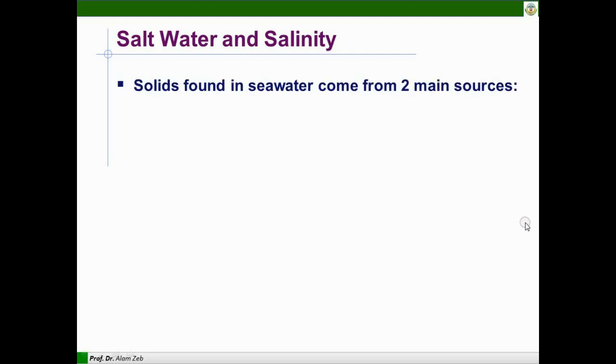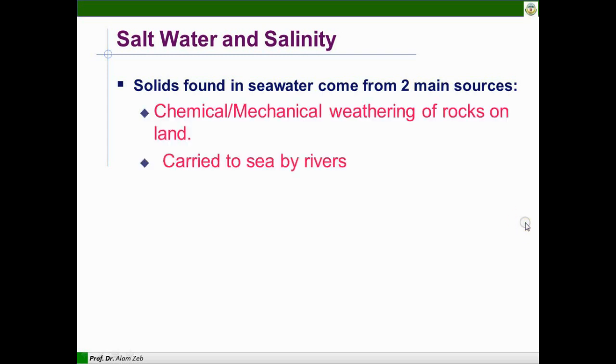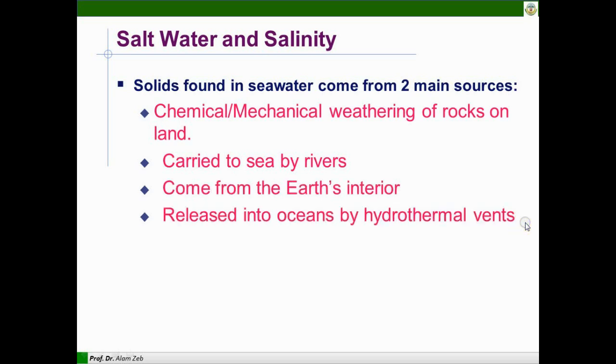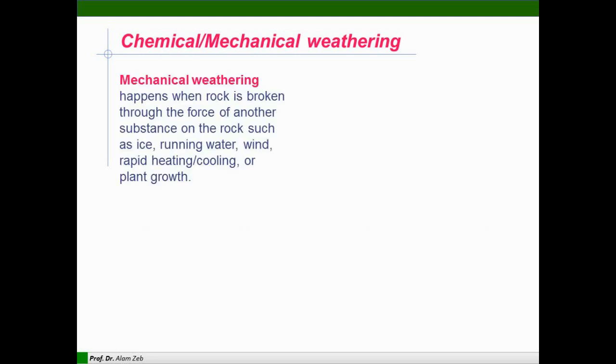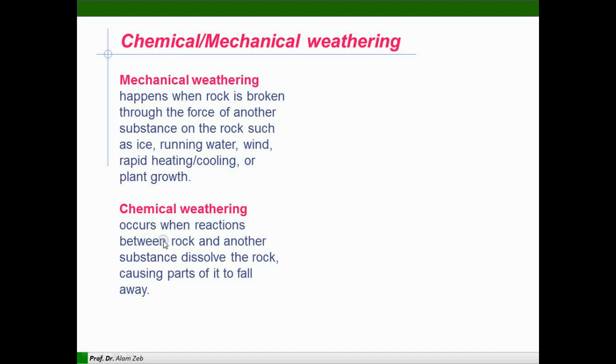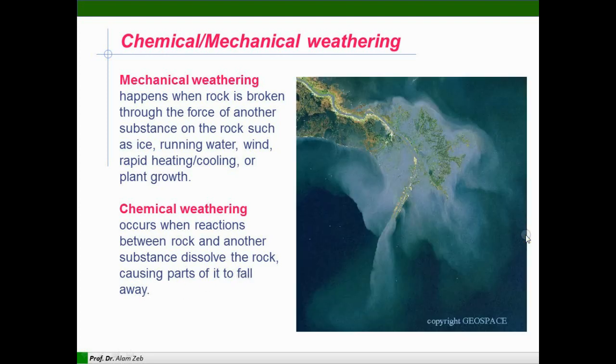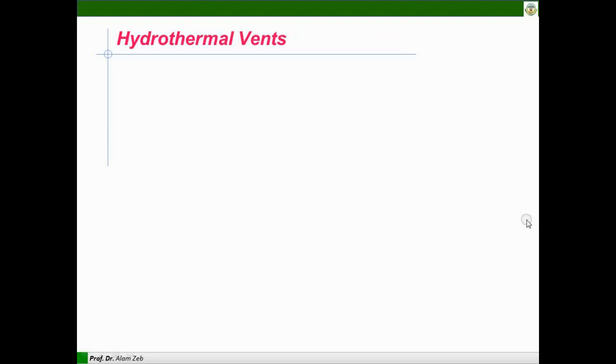Salt water and salinity. Solid water found in seawater comes from two main sources: chemical and mechanical weathering of rocks on land carried to sea by rivers comes from the Earth interior and released into the ocean by other processes. Mechanical weathering happens when rock is broken down into smaller parts. Chemical weathering occurs when reactions between rocks and other substances dissolve the rock, causing part of it to fall away.